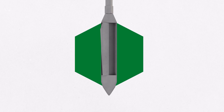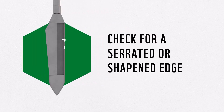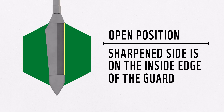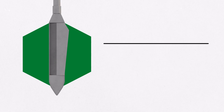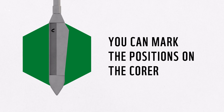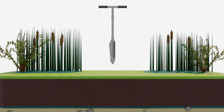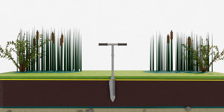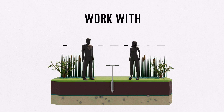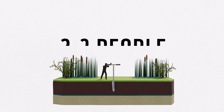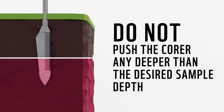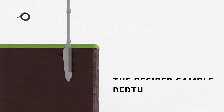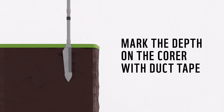Note that peat core barrels have an open and a closed position. Check to see if the barrel has a serrated or sharpened edge. If the sharpened edge is on the inside edge of the guard, the corer is in the open position. If the serrated edge is in the middle of the guard, the peat core is in the closed position. You can mark which position is closed to provide an easy visual cue. With the corer in the open position, align the corer with the selected coring spot. Using the handle, drive the corer into the peat until the top of the barrel aligns with the top of the sample being collected. In very dense peat, two to three people may be needed, or a sledgehammer can be used. Do not push the corer any deeper than the desired sample depth, or it will invalidate the core sample. To avoid going too deep, you can label the desired depth on the corer itself with tape before inserting the corer.